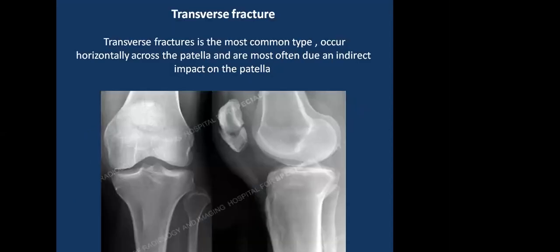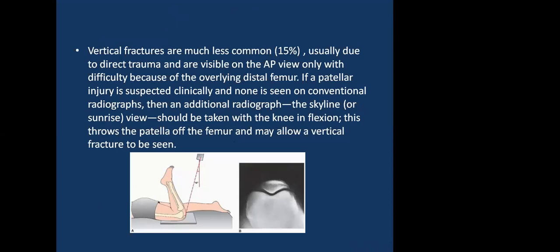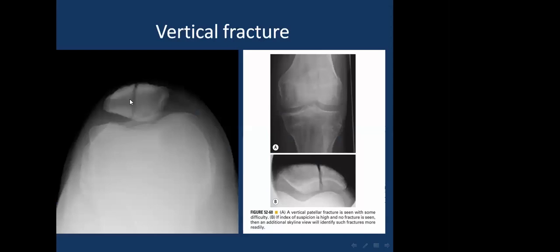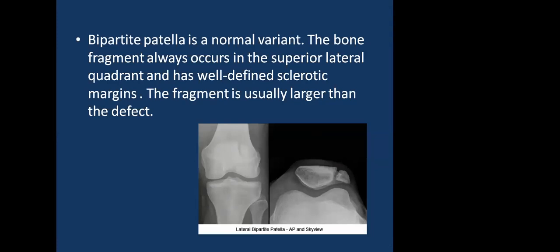The transverse fracture is the most common type, occurring horizontally through the patella, usually due to indirect impact, best seen on lateral view. Vertical fractures account for about 50% and are usually due to direct trauma, visible on AP view only with difficulty due to overlying distal femur. A skyline view with the knee in flexion is recommended for suspected vertical patellar fracture. We must distinguish a vertical patellar fracture from a bipartite patella, which is a normal variant. The bone fragment in bipartite patella always occurs in the superior lateral quadrant and has well-defined sclerotic and corticated margins, with the fragment usually larger than the defect.